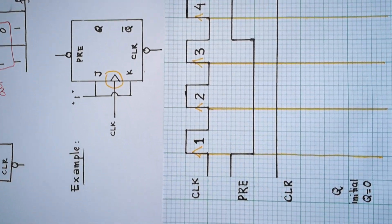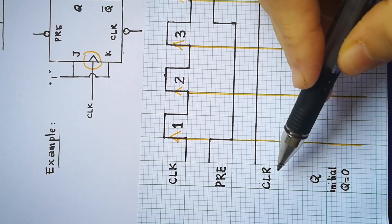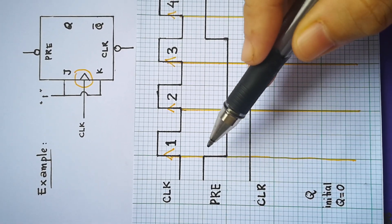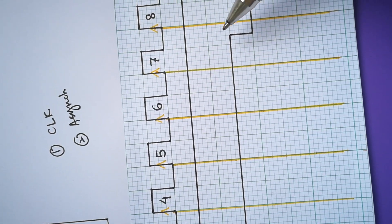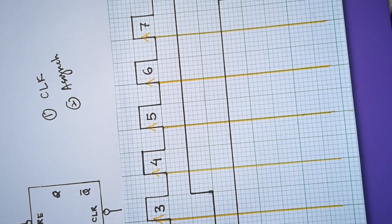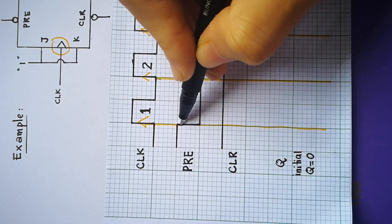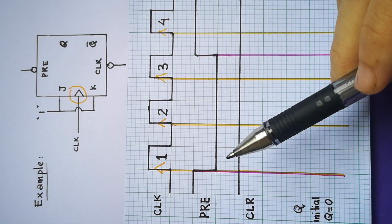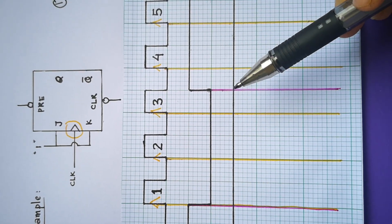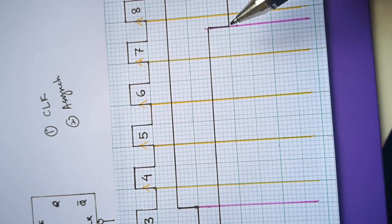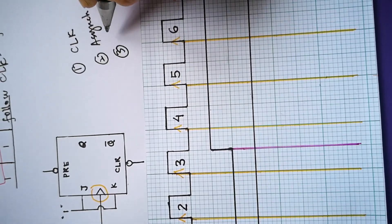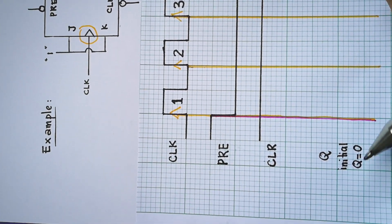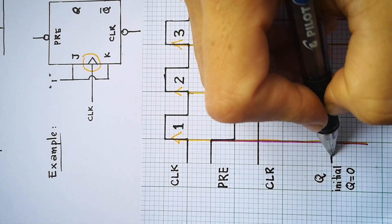Next, you must draw the asynchronous lines. Asynchronous inputs are PRE and CLEAR. You draw a line at each transition for PRE or CLEAR. The first transition is here, the second is here, and the third one is here — shown by the pink color lines. Finally, you must know the initial state. For this question, Q is given as 0, so you start with 0 here.